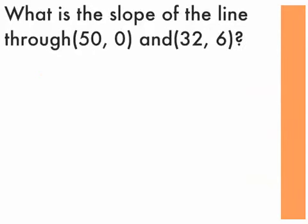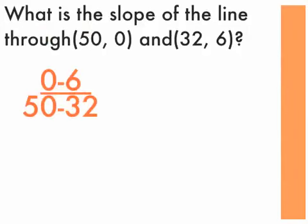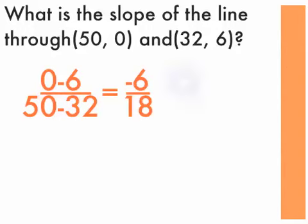The next example asks: what is the slope of the line through (50, 0) and (32, 6)? The y values are 0 and 6; the x values are 50 and 32. There are two correct ways to plug these in. First: 0 minus 6 over 50 minus 32, where 0 and 50 come from one ordered pair and 6 and 32 from the other. That gives negative 6 over 18.